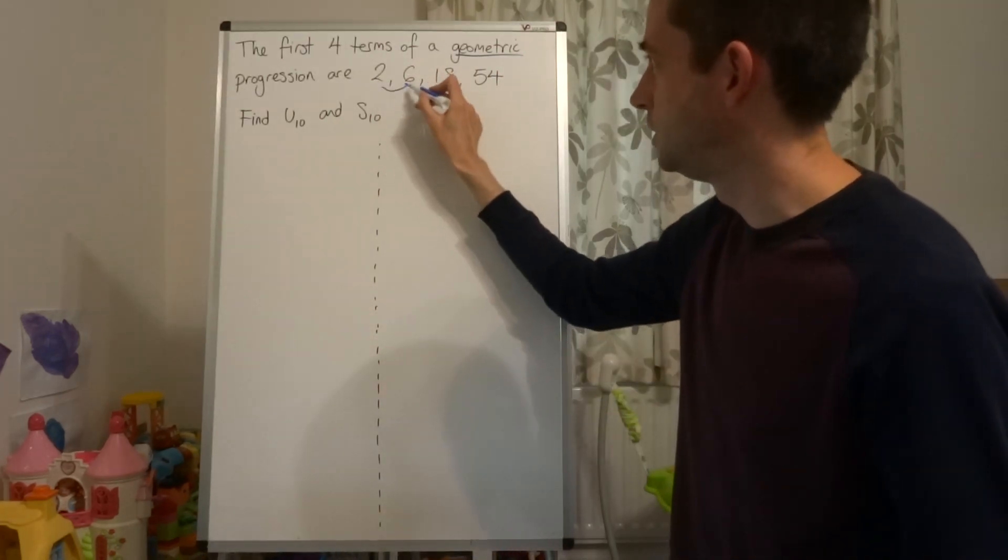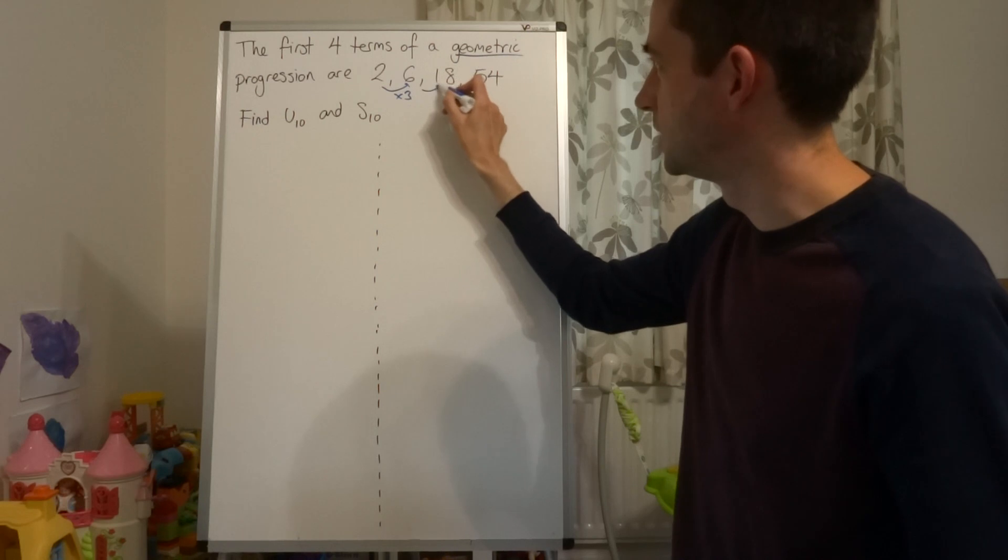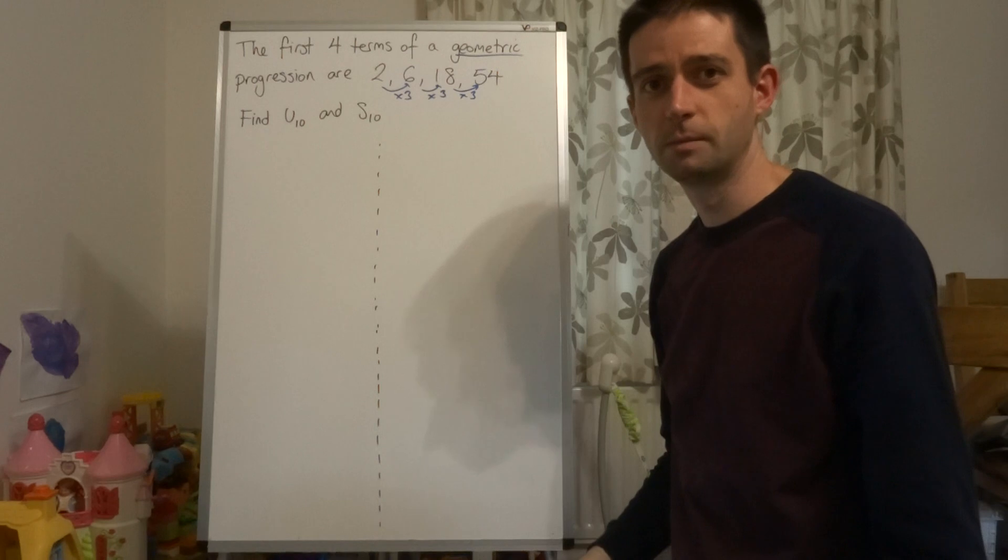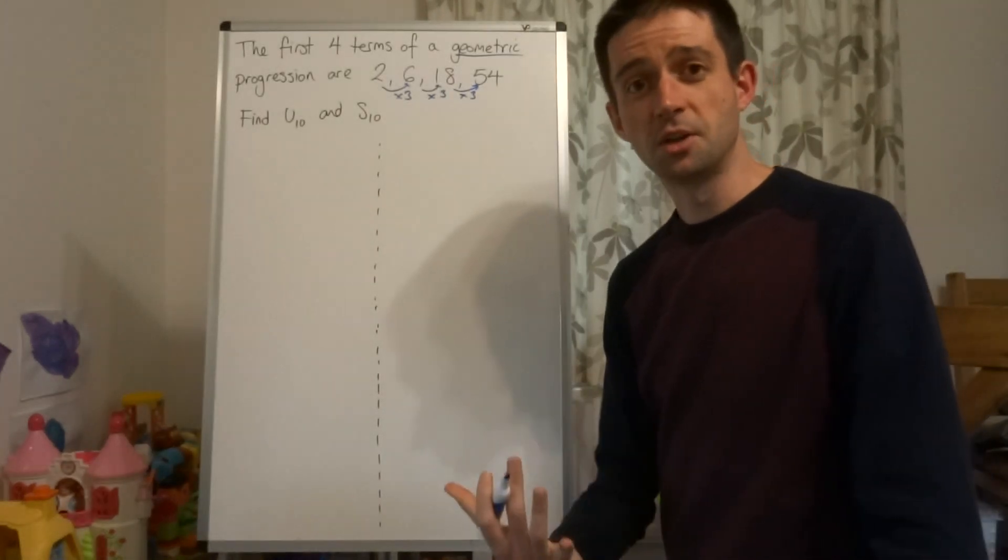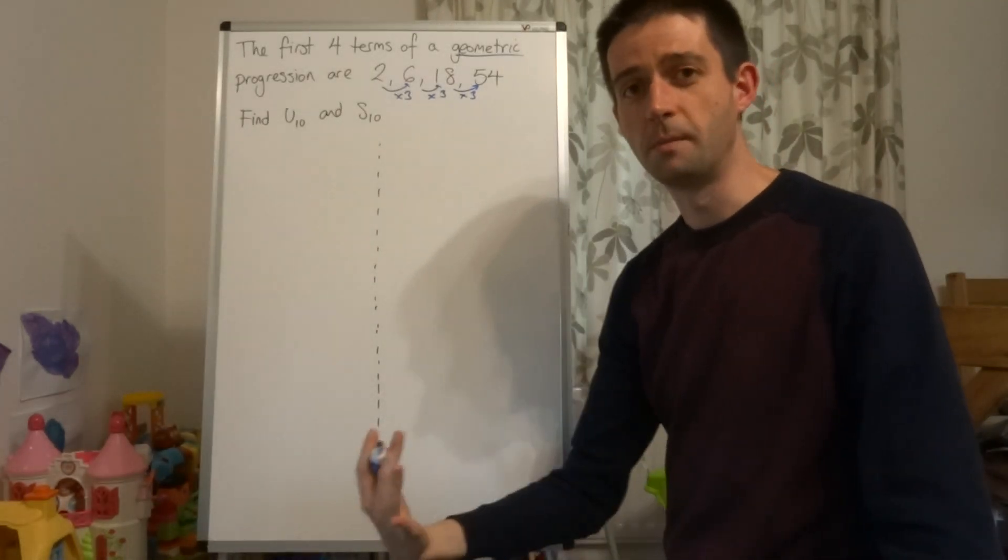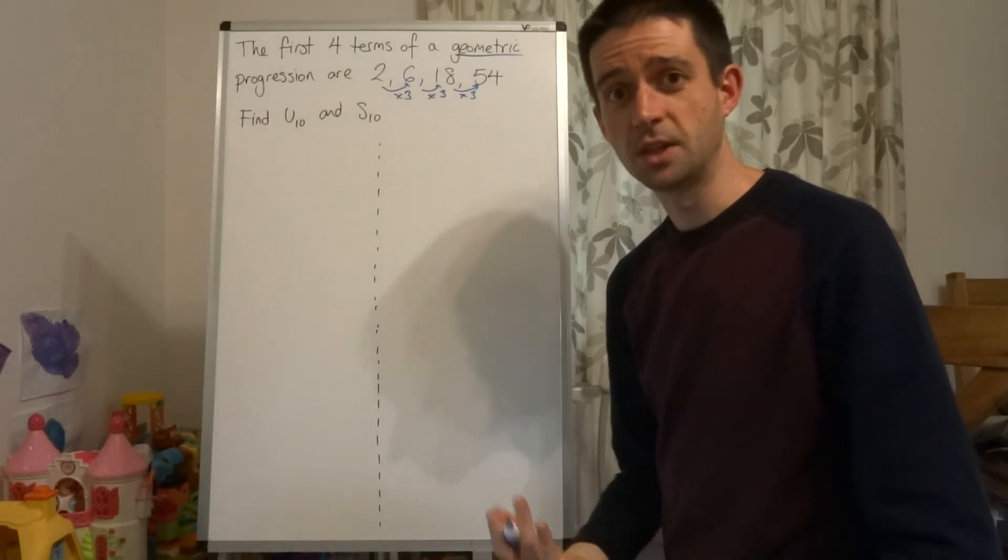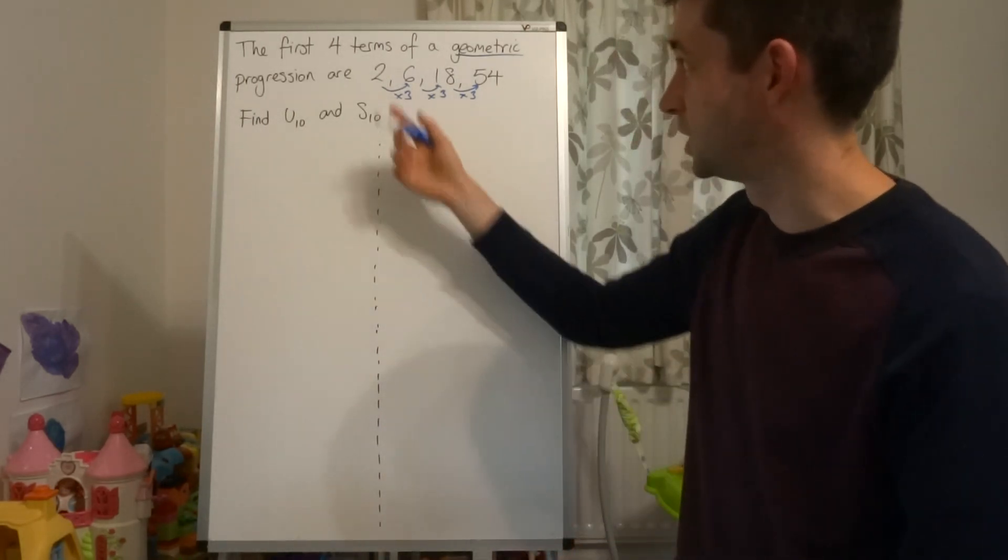In this case, to get the next term in the sequence we're multiplying each of the previous terms by 3. That is our common ratio - what we multiply by to get the next term. The only other thing we need to identify at this stage is the first term, which is obviously 2.